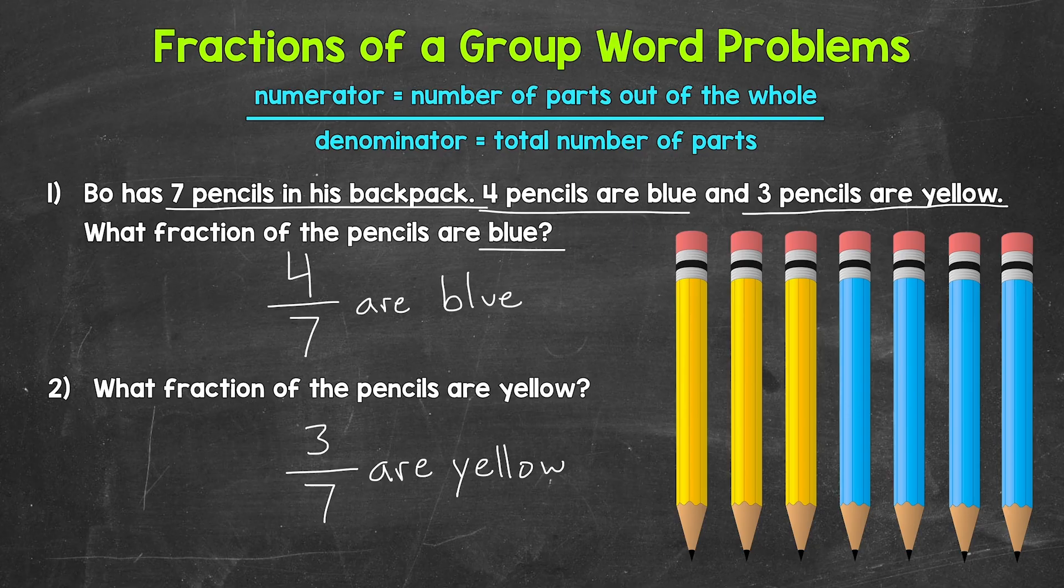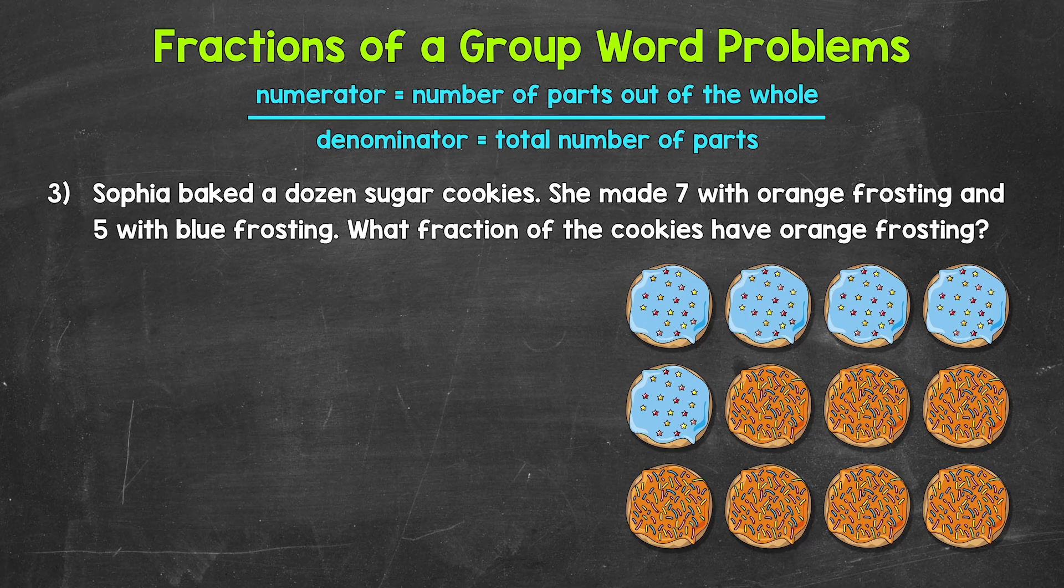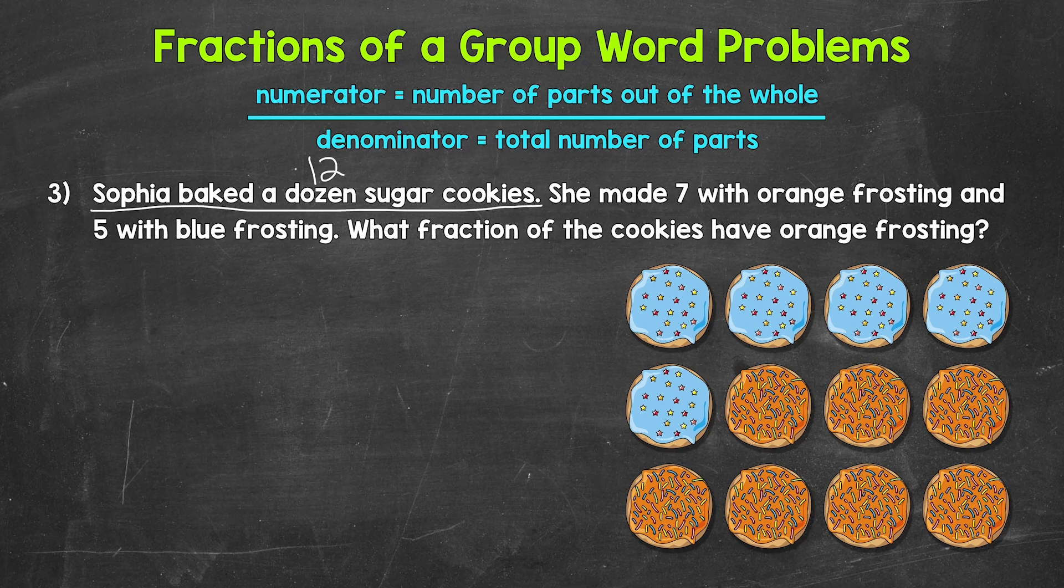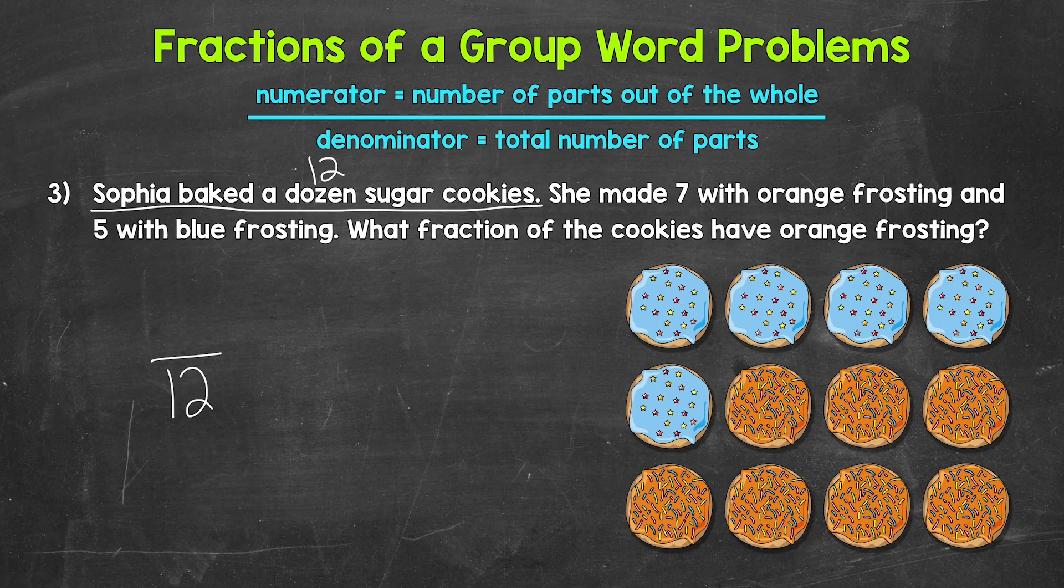Let's move on to number three. Taking a look at number three, we have Sophia baked a dozen sugar cookies. And remember, a dozen means 12. She made seven with orange frosting and five with blue frosting. What fraction of the cookies have orange frosting? Let's start with the denominator. So the total number of cookies here. Sophia baked a dozen sugar cookies. Again, a dozen is 12. So 12 is our denominator here.